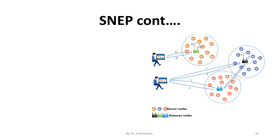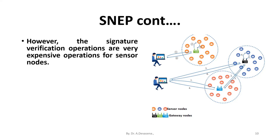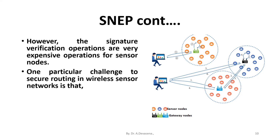However, signature verification operations are very expensive for sensor nodes. One particular challenge to secure routing in wireless sensor networks is that it is very easy for a single node to disrupt the routing process by disrupting the route discovery process.